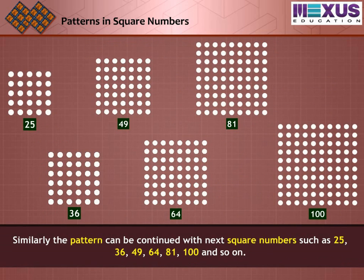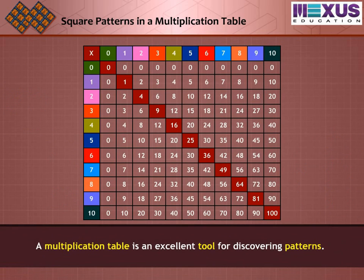Similarly, the pattern can be continued with next square numbers such as 25, 36, 49, 64, 81, 100 and so on. A multiplication table is an excellent tool for discovering patterns.